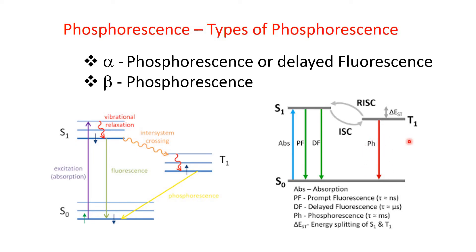What may also happen is that from this triplet excited state, the electron may return back to S1, the first singlet excited state, by acquiring energy from the environment. This process is known as reversed inter-system crossing. After coming to S1, it can come back to S0 — a transition from S1 to S0 — which is like fluorescence. So this process is known as alpha phosphorescence or delayed fluorescence, where the transition is T1 to S1, then S1 to S0. This delayed fluorescence depends on the energy difference between S1 and T1.